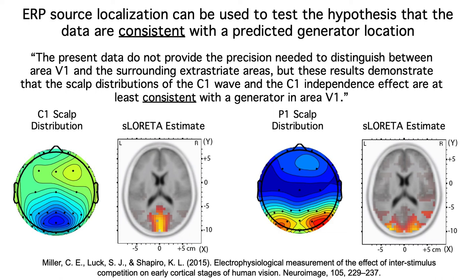Check out this paper as an example. The bottom line is that the ERP technique is not well suited for answering questions about neuroanatomy. Its strength is temporal resolution, and the highest impact ERP studies take advantage of this strength and avoid the weakness of poor spatial resolution.